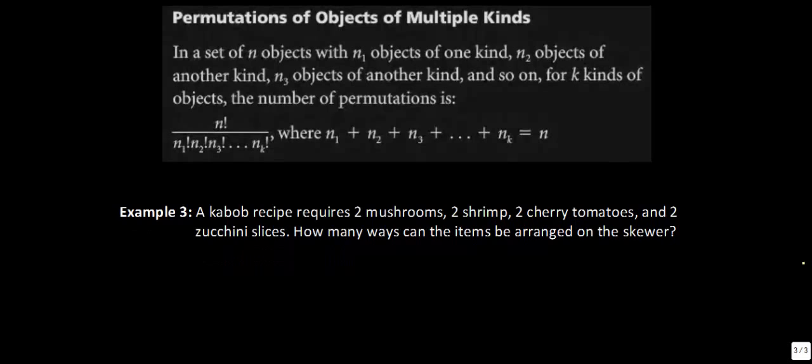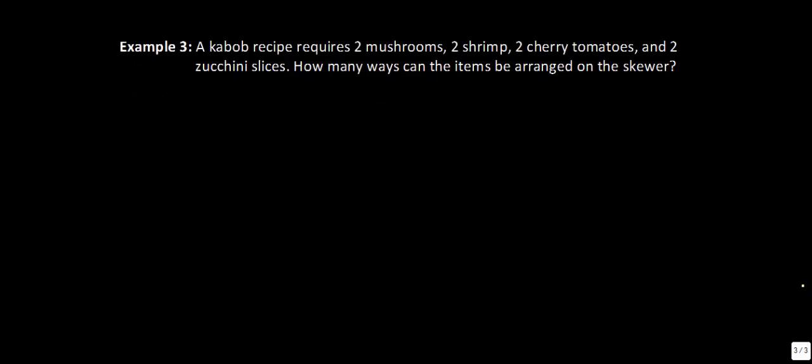Last thing that I have for you is really just this note right here that says no matter how many of these repeating events that we have, we just put the repeating events down here in the denominator. So we have a good example of that right here with this kebab question. So it says we have a kebab recipe. It requires 2 mushrooms, 2 shrimp, 2 cherry tomatoes, and 2 zucchini slices. So if you can imagine, we're going to put those in some kind of different order. So how many different types of, I guess you'd say, or how many different items are we putting on our kebab? We would have 8 factorial.